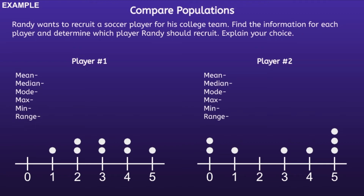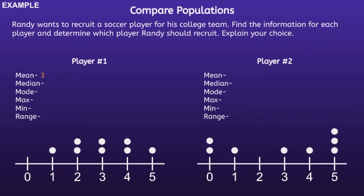Compare populations. Randy wants to recruit a soccer player for his college team. Find the information for each player, and then determine which player Randy should recruit. Explain your choice. So let's start with player 1. In order to find the mean, we have to add up all the numbers and then divide by the total terms. That would be 1 plus 2 plus 2 plus 3 plus 3 plus 4 plus 4 plus 5, and then divide by 8, since there are 8 terms total. That will leave us with 24 divided by 8, which is equal to 3. So the mean for player 1 will be 3.